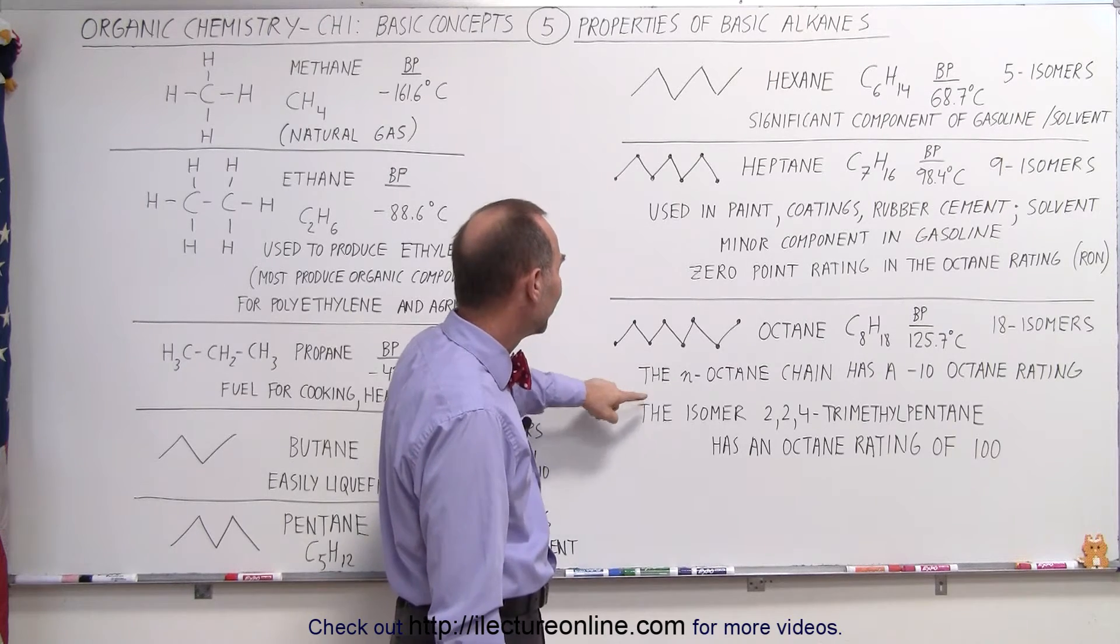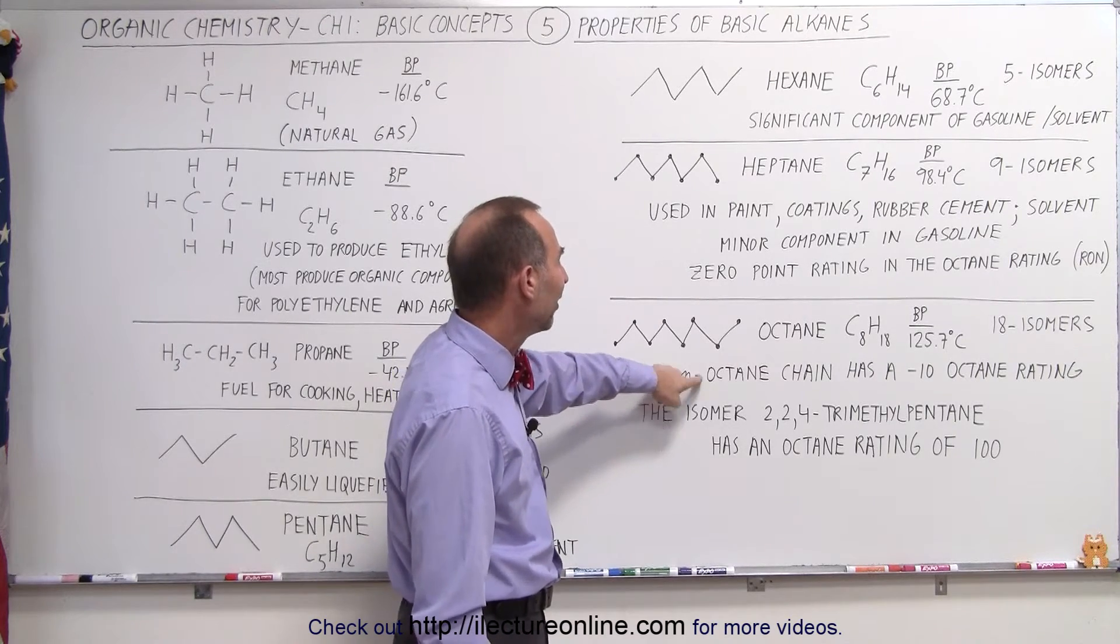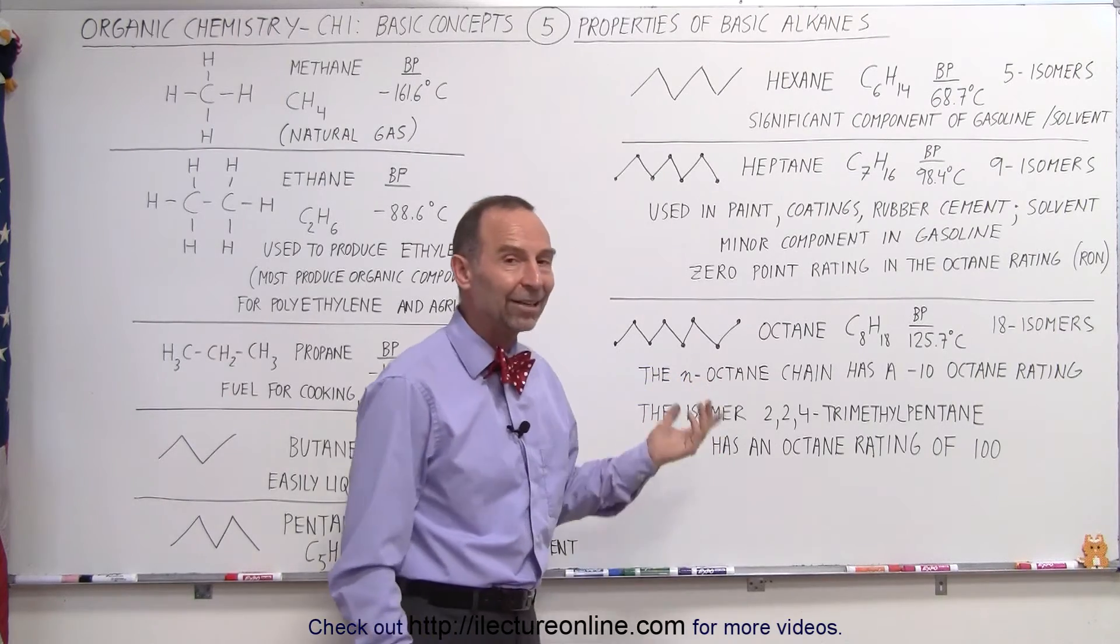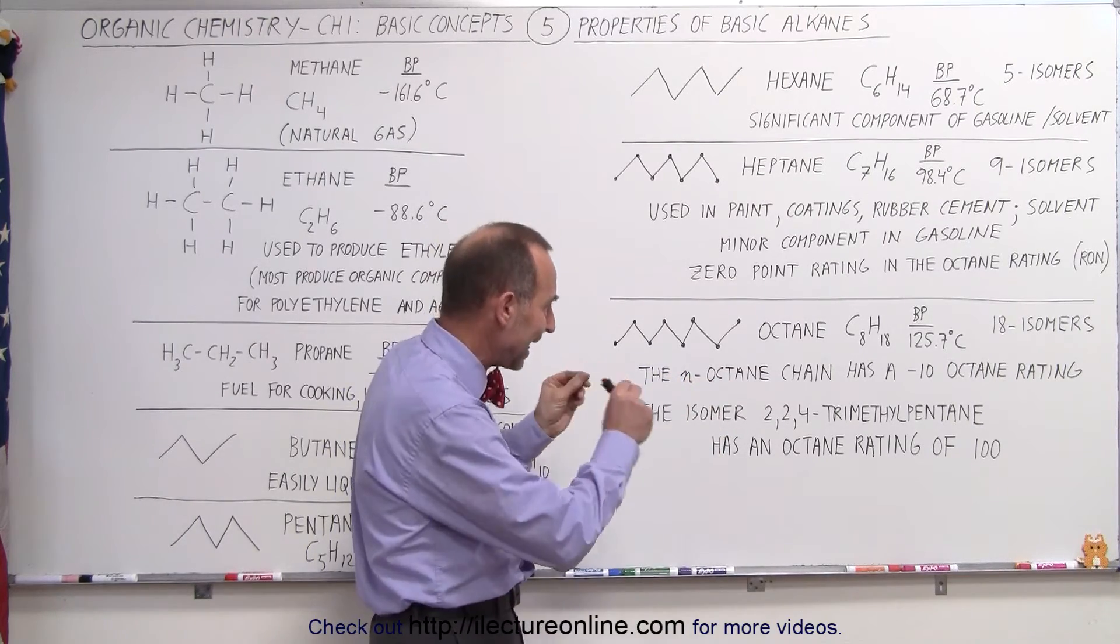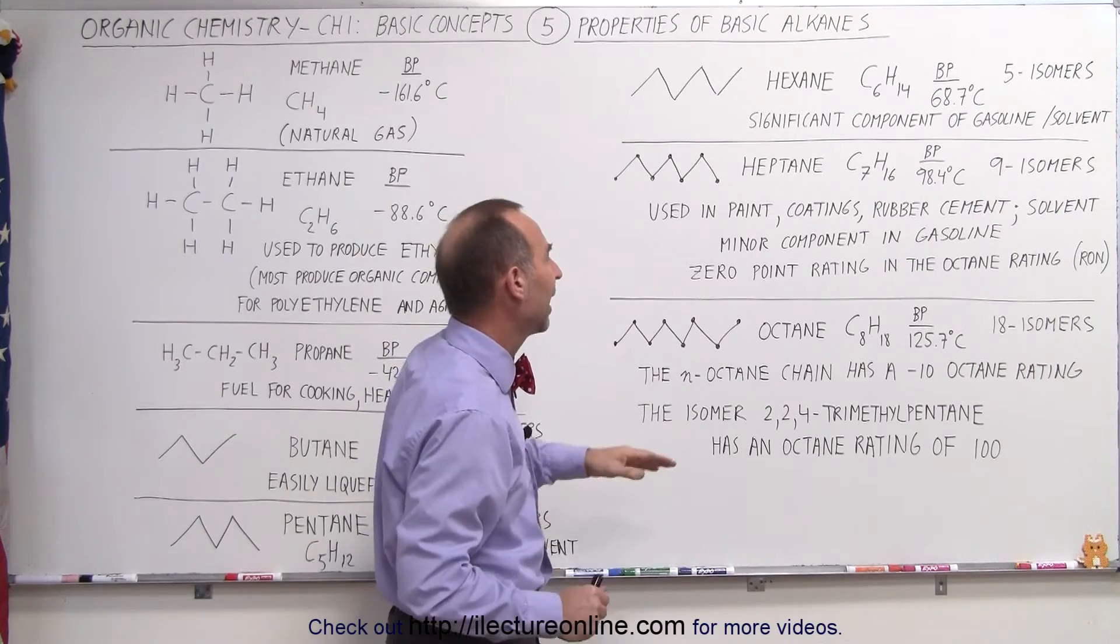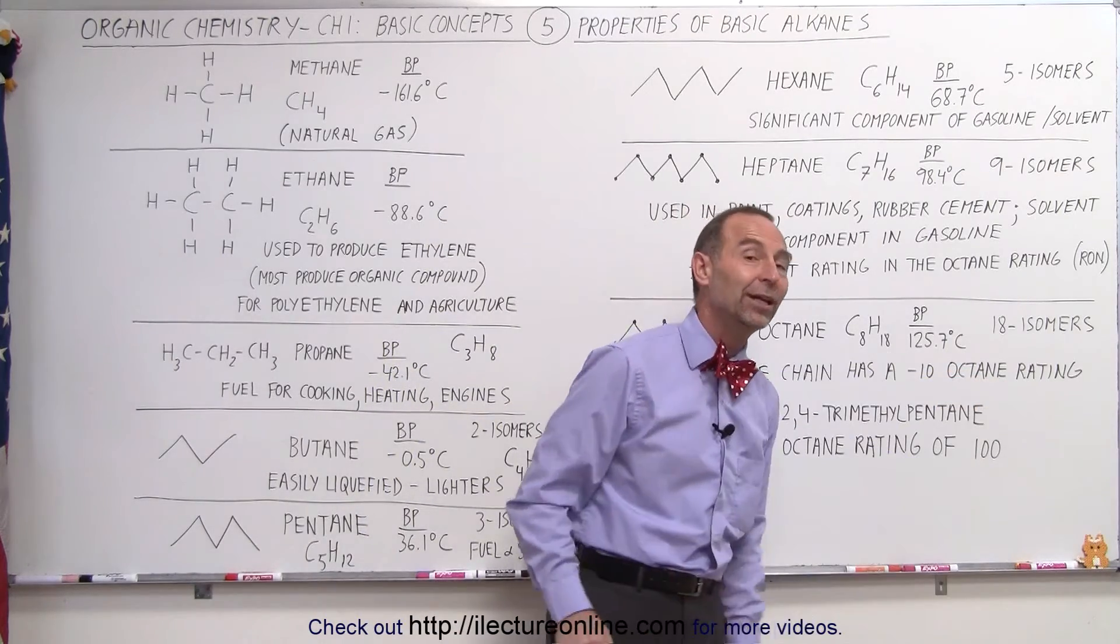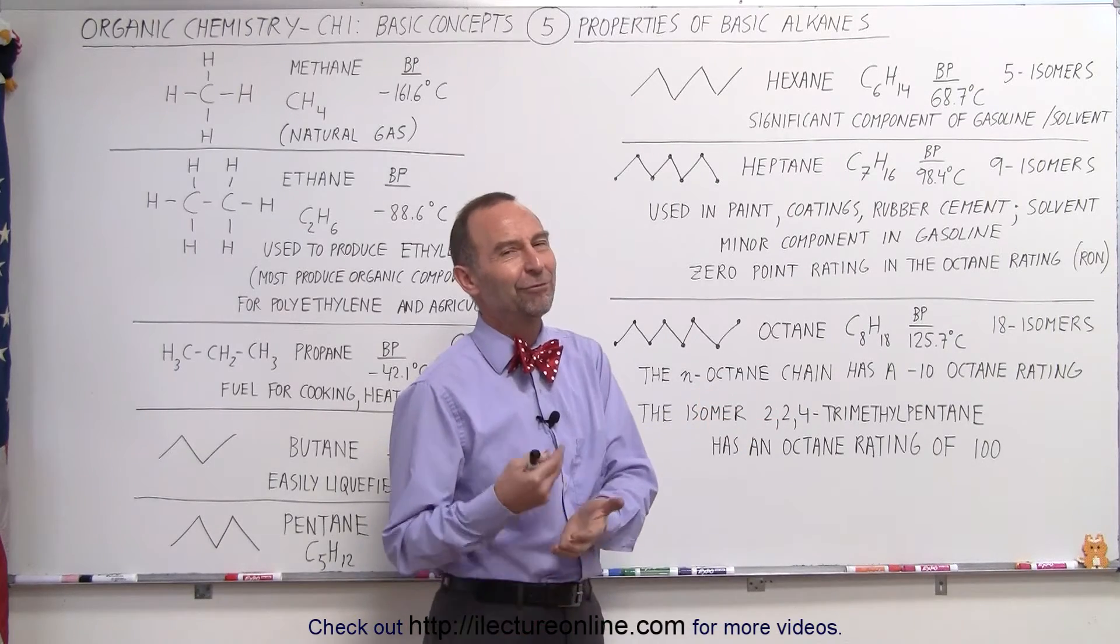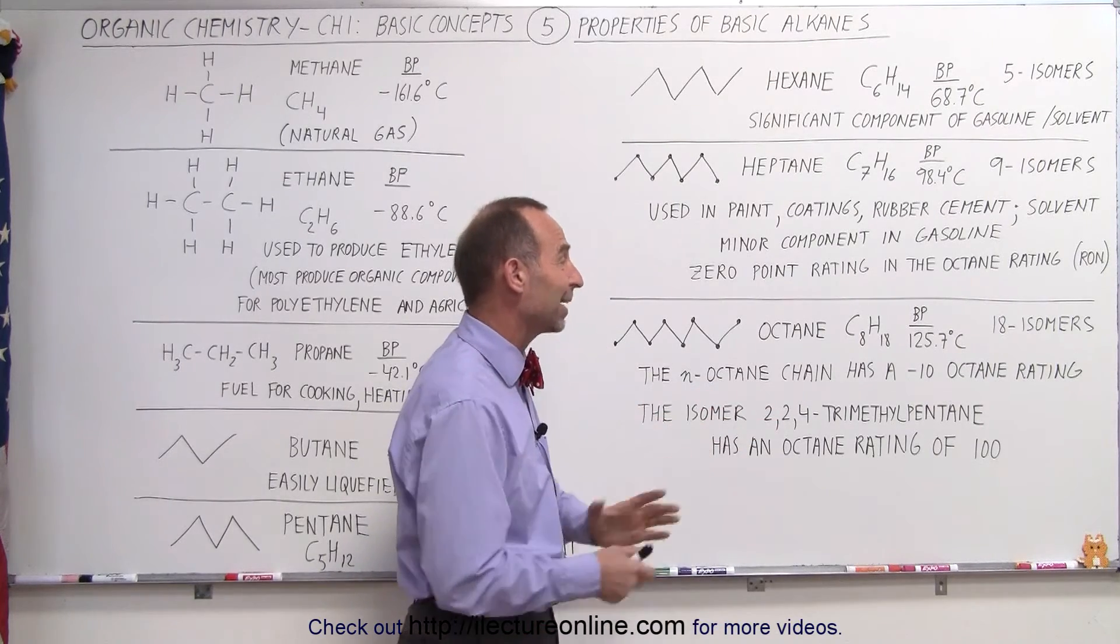However it turns out that the octane rating of the straight chain which is called n-octane, n stands for normal. The normal eight carbon chain of octane has a minus 10 octane rating. So if you add this kind of component to your gasoline you would have a very bad octane rating. You don't want a minus 10 of course.